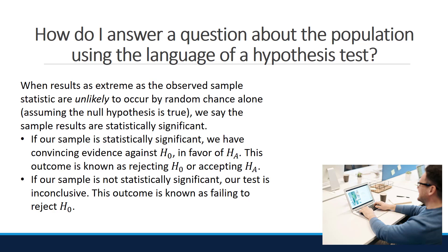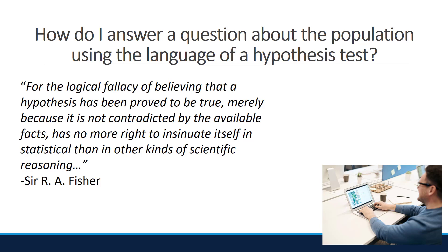If our sample is statistically significant, we have convincing evidence against the null in favor of the alternative. This outcome is known as rejecting the null, or we could say accepting the alternative. If our sample is not statistically significant, our test is inconclusive — the outcome is known as failing to reject the null. An important thing to note about the formal conclusion is that failing to reject the null is not the same as accepting the null, because lack of evidence against the null is not the same as evidence for it. A famous statistician noted that the logical fallacy of believing a hypothesis has been proved merely because it is not contradicted by the available facts has no more right to exist in statistical reasoning than in other kinds of scientific reasoning — suggesting we should never accept the null hypothesis.